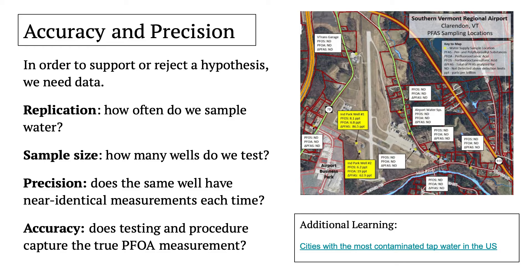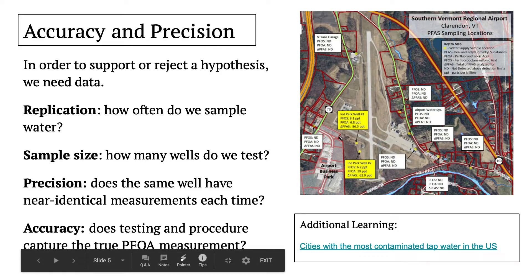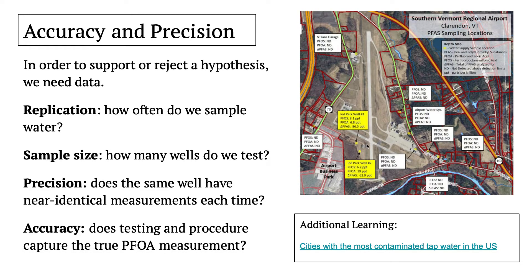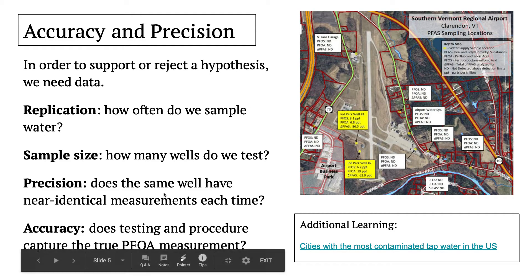The more accurate our data, the more likely we're going to be able to understand differences and test our hypothesis. This is a site where a plane crashed at Rutland Regional Airport, where they used flame retardants — a type of PFOA. They were able to measure to the parts per trillion different wells that were contaminated. This is really important in terms of these different aspects of measurement.